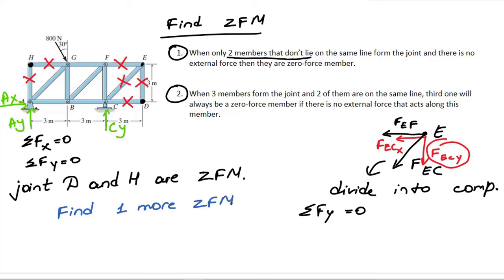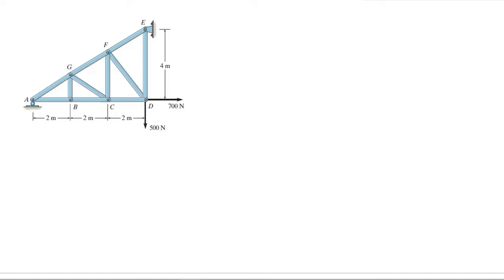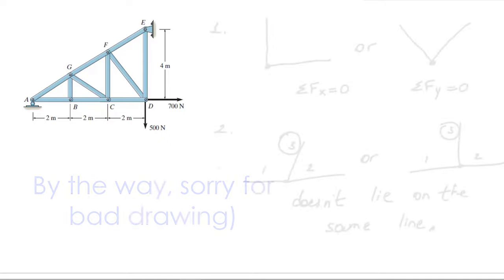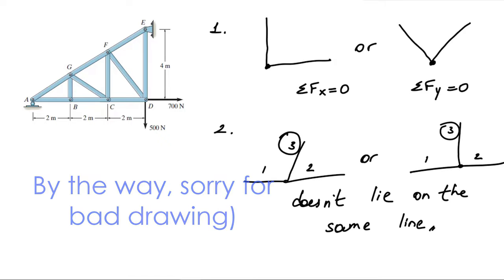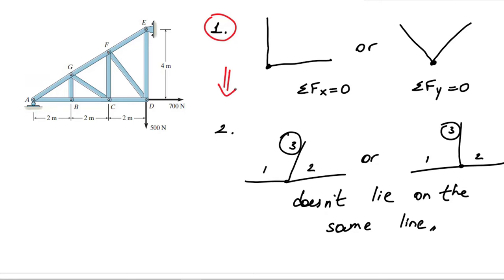In second example, we were also asked to find zero force members. Let me draw here zero force member conditions. If I start from condition one, I see that there is no joint that has two forces or two members on it. Maybe you say that point A has two members on it, but remember A is support and there will be additional forces as well.